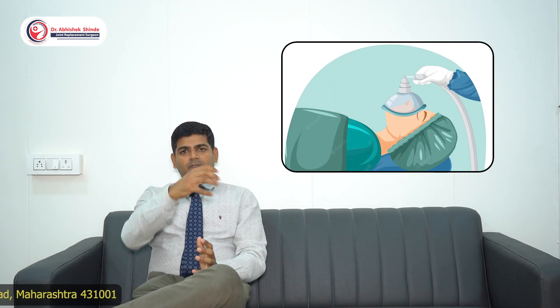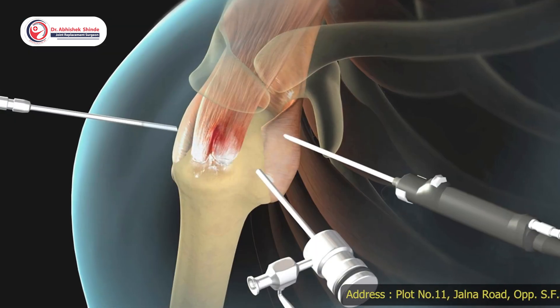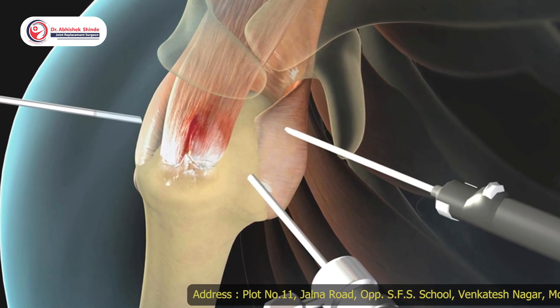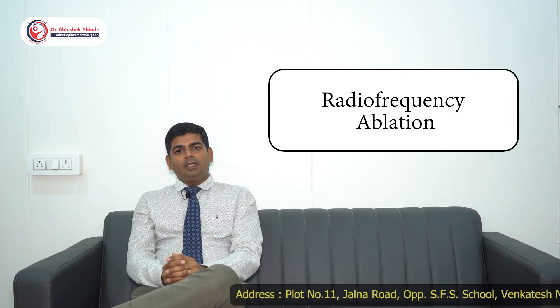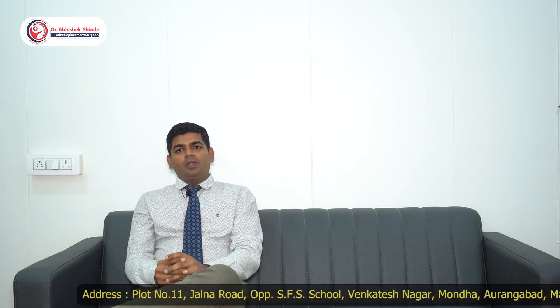Under X-ray guidance, we perform intra-articular procedures on the shoulder. We inject saline into the capsule — a procedure called hydrodistension. For refractory cases, the primary surgical treatment is arthroscopic capsular release with arthroscopic debridement and ablation of the capsule.